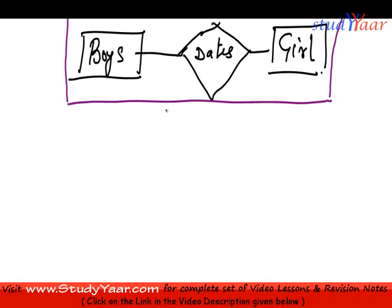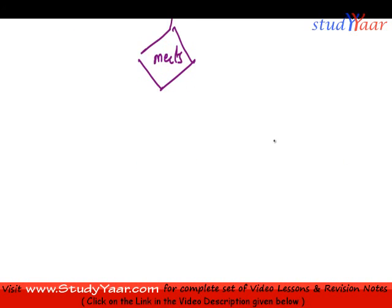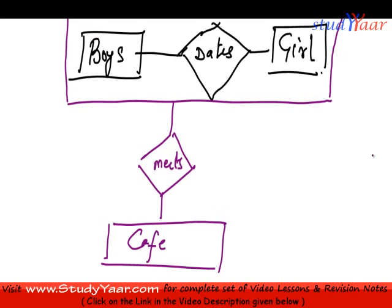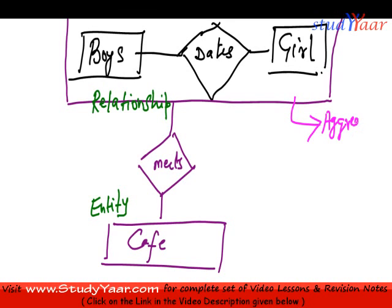Now I can say that this combination meets at a cafe. So aggregation helps me form a relationship between relationships, or between a relationship and an entity. This relationship here is between a relationship and an entity, and this is called aggregation — because I have aggregated the relationship so that it can act as an entity in my entity relationship model.